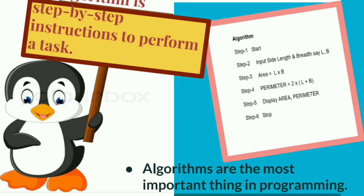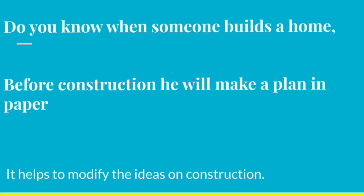Algorithms are the most important thing in programming. There is a computer, software development. There is a planning. That plan is algorithm. Do you know when someone builds a home, before construction, he will make a plan in the paper. So it helps to modify the ideas on constructions.